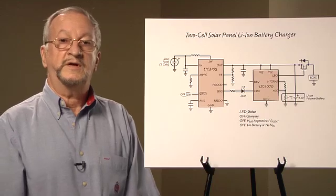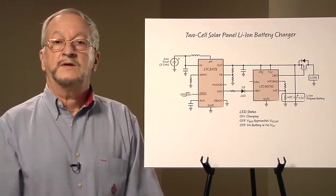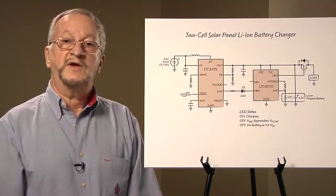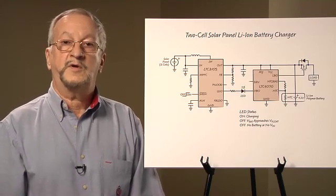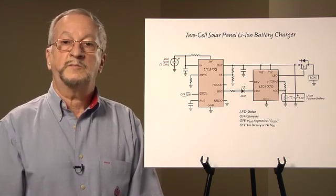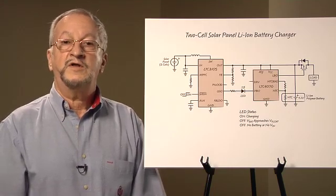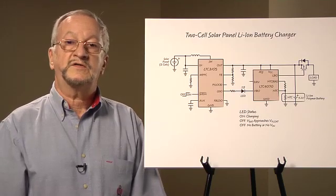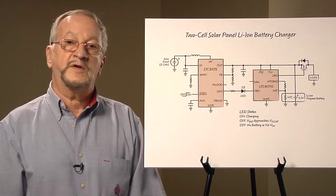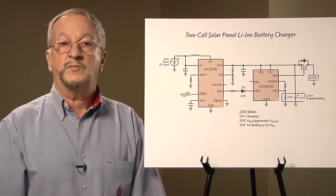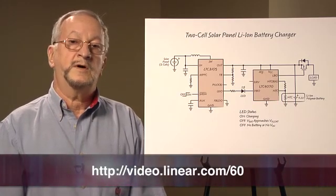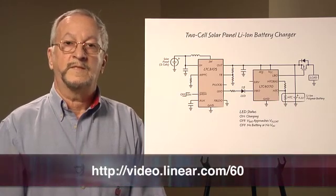In conclusion, the LTC 3105 has unique features that make it ideal for low-power solar applications. Maximum power point control allows the converter to extract the maximum available power under varying sunlight conditions, while the LTC 4070 provides the precision float voltage required for lithium-ion batteries and additional battery functions. Visit us at www.linear.com for more information. Thank you.